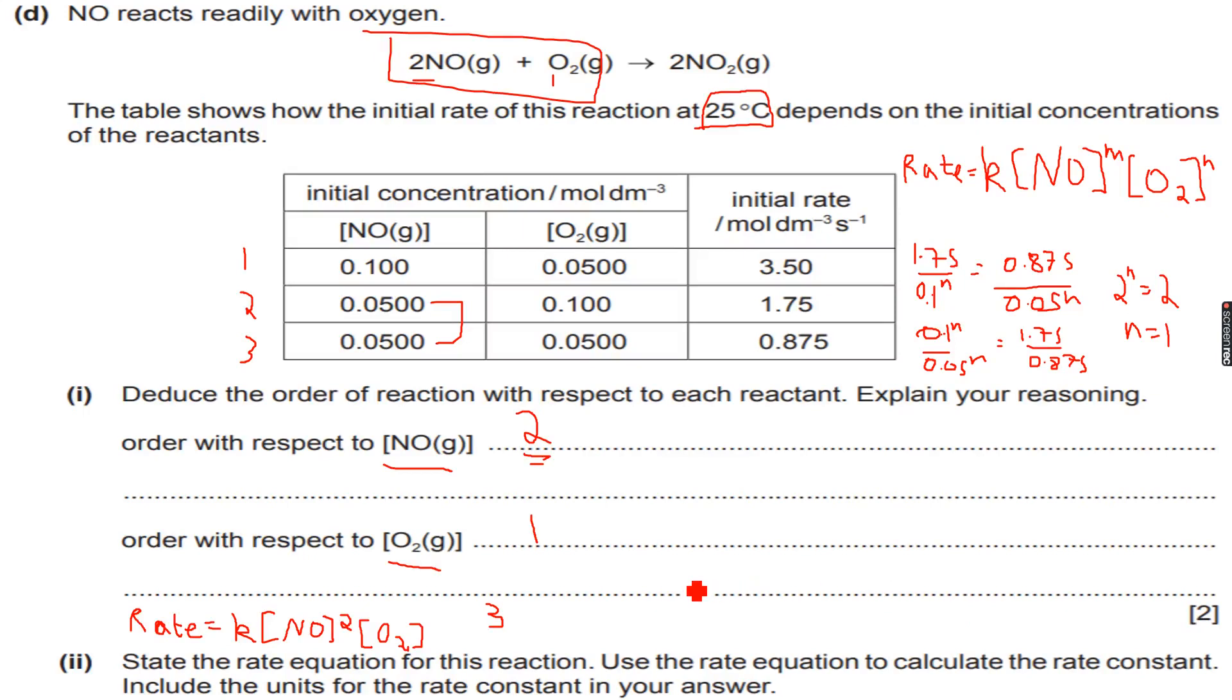The overall order of reaction is 3. So this is our rate equation. We have successfully made a rate equation and then it asks us to use the rate equation to calculate the rate constant. Include the units for the rate constant in your answer. So I have the rate equation now.